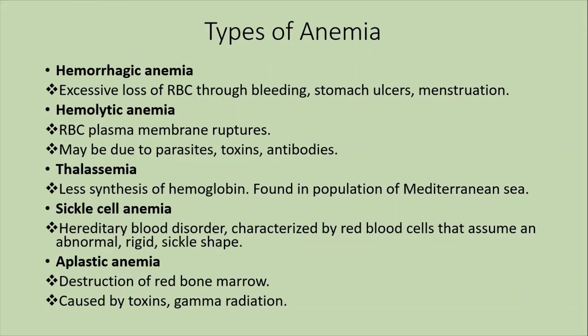In thalassemia, hemoglobin production is deficient, and it is more common in the Mediterranean population. In sickle cell anemia, there is a red blood cell disorder where red blood cells assume an abnormal rigid sickle shape. Aplastic anemia involves destruction of the red bone marrow by toxins, gamma radiation, or chemotherapy.